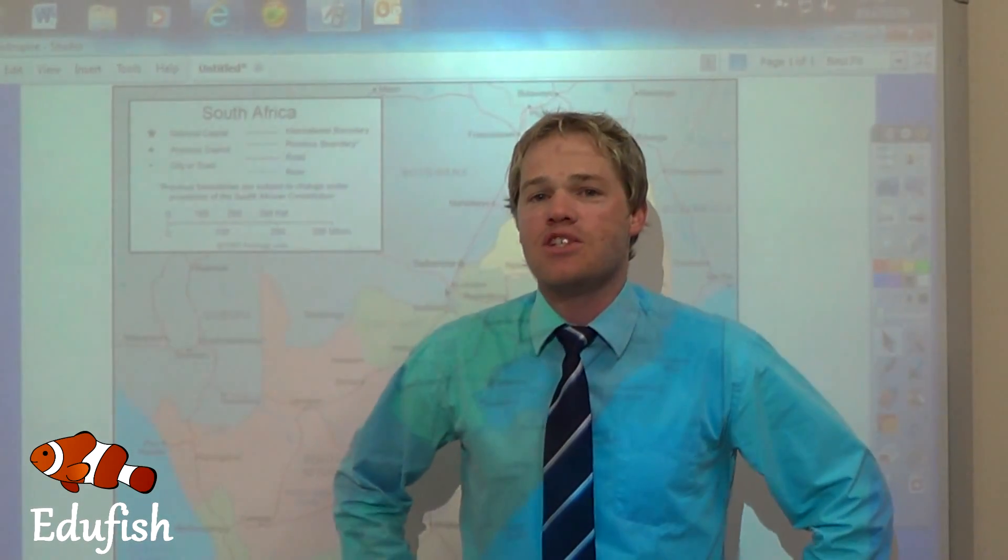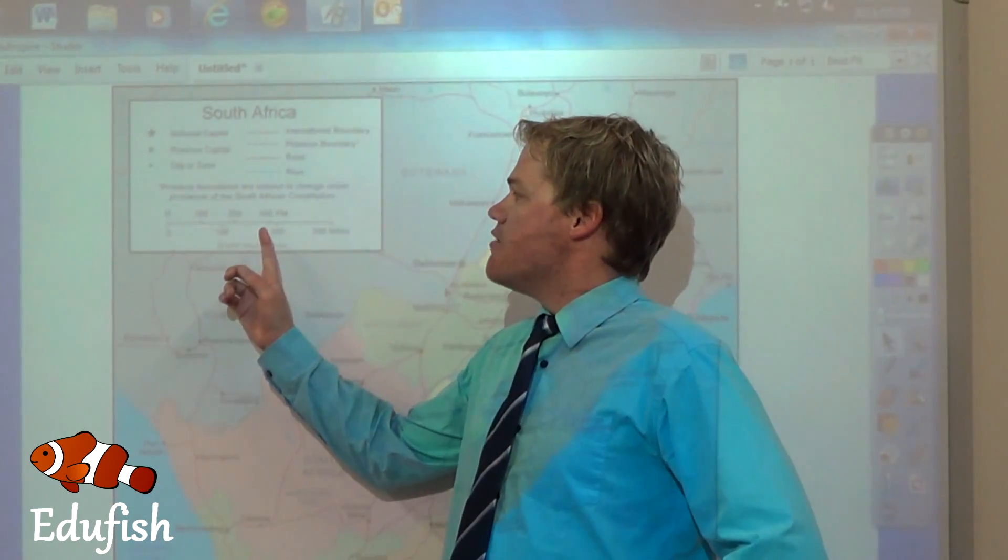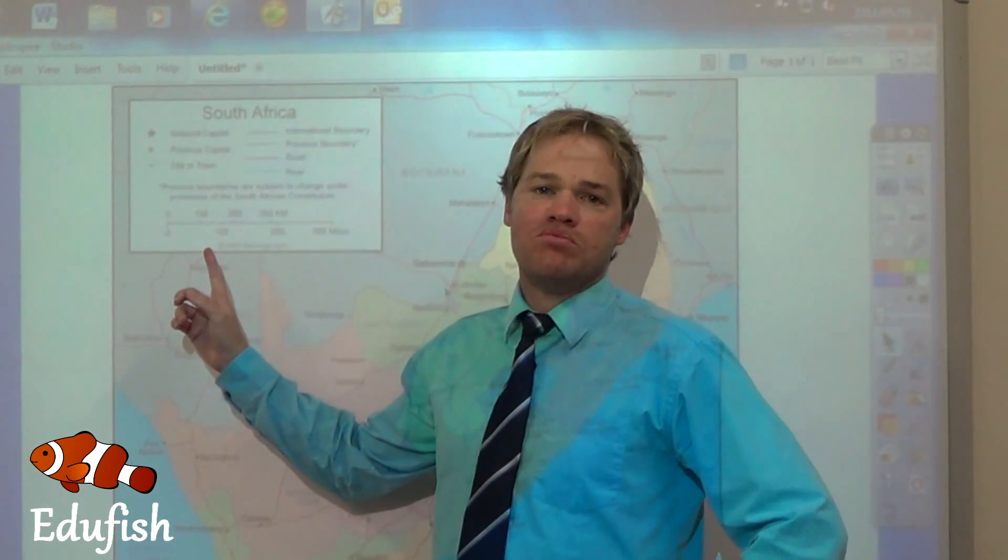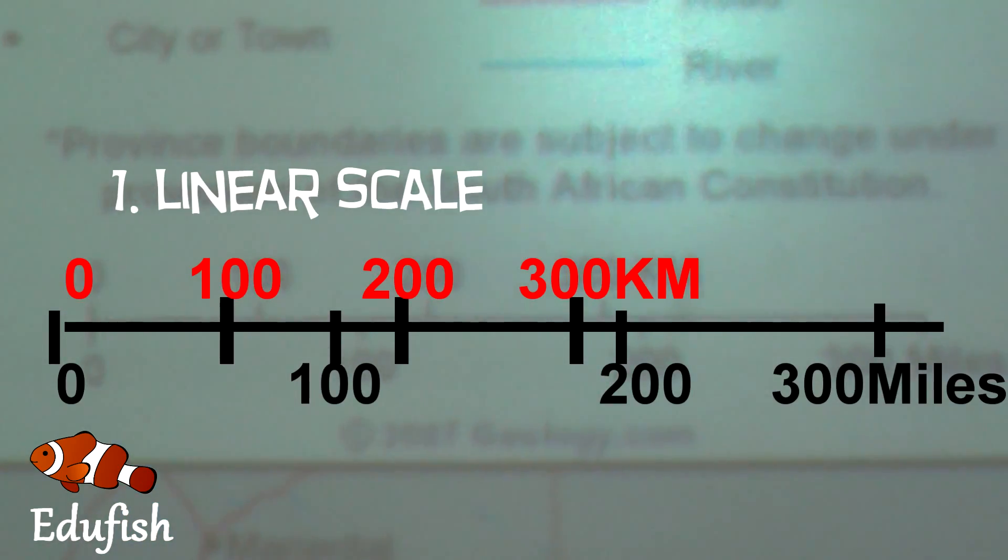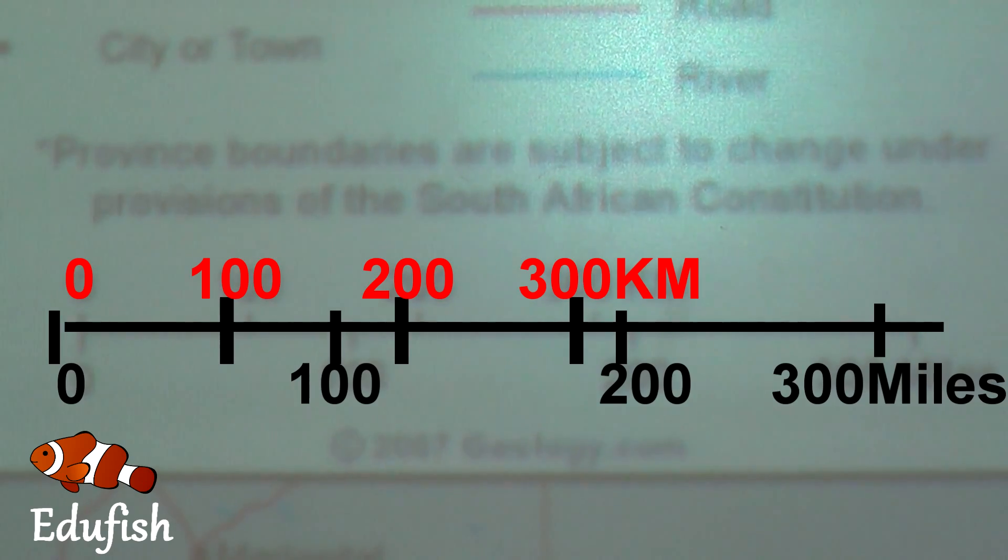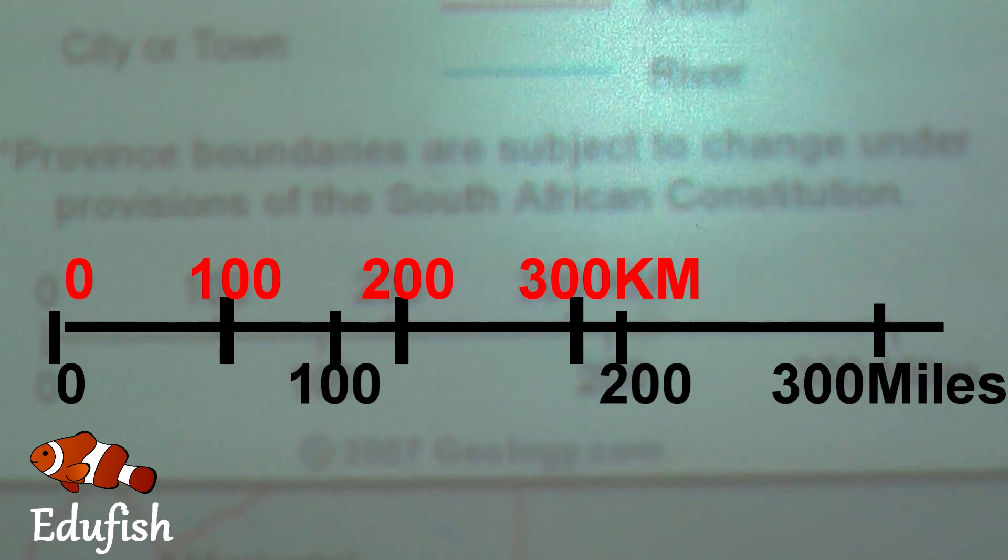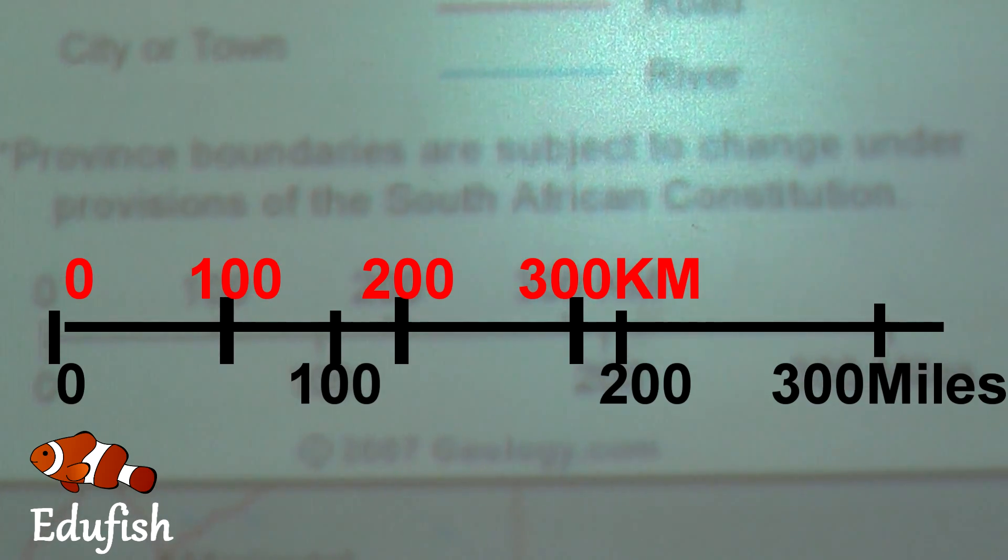The first scale I'm going to talk about is the line scale, or the linear scale, and we normally see it over here, somewhere in the corner of the map, or on the map key. Now, that is what it looks like. You'll see there's a straight line, and then some numbers there at the top, 0, 100, 200, 300 kilometers. And at the bottom, 0, 100, 200, and 300 miles.